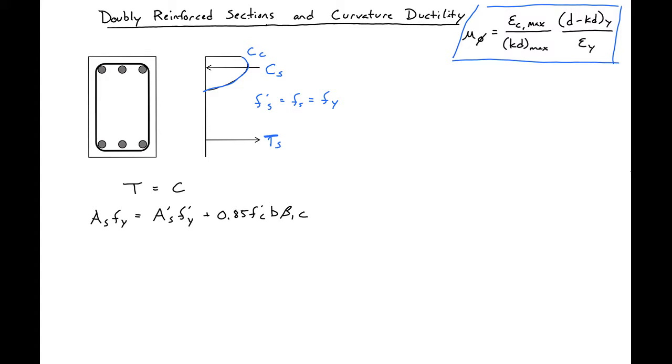Once again, we can divide by BD to give us reinforcement ratios, and then simplify.